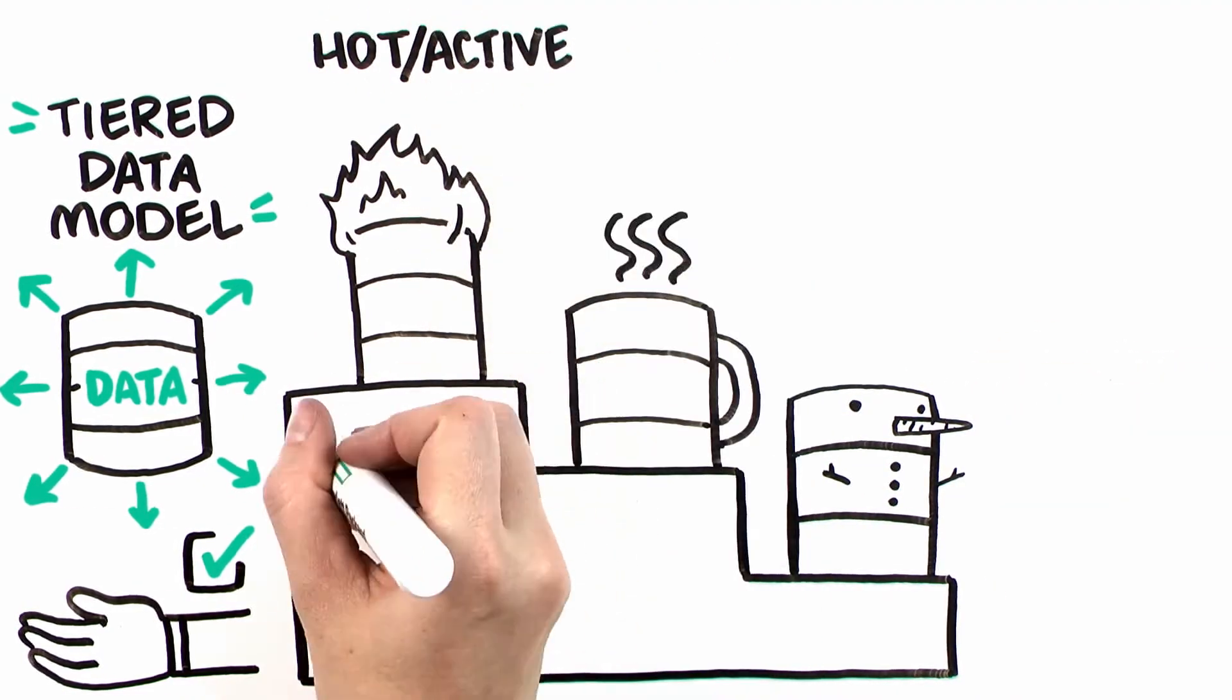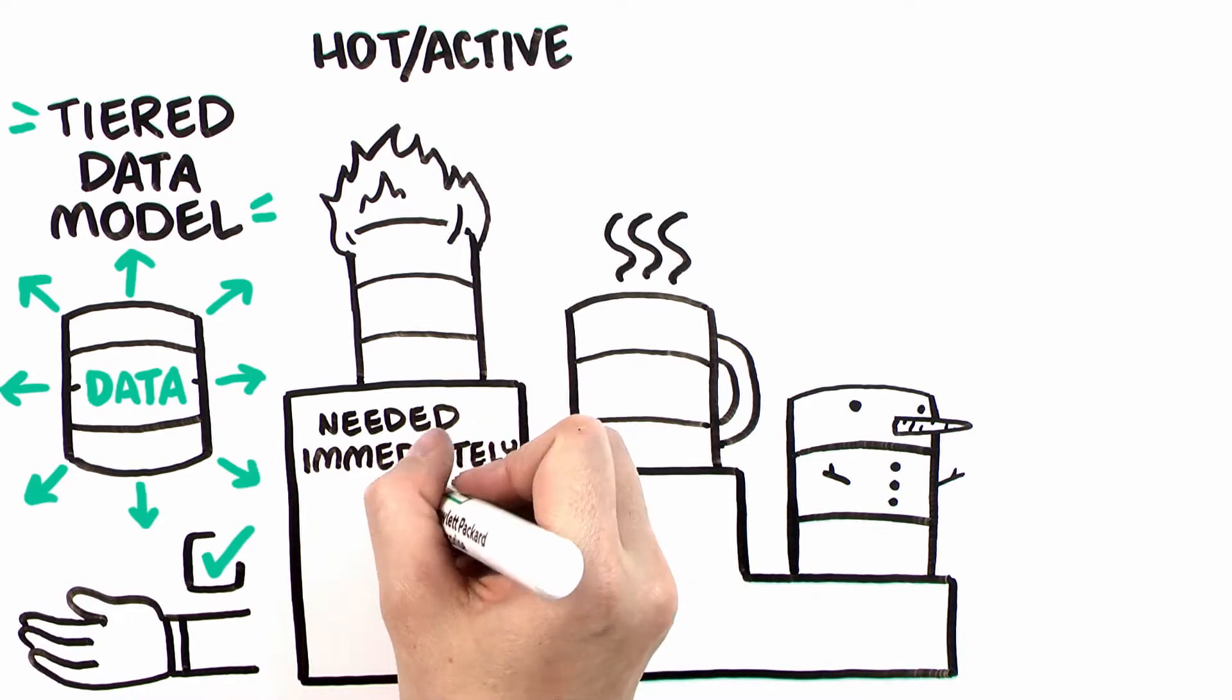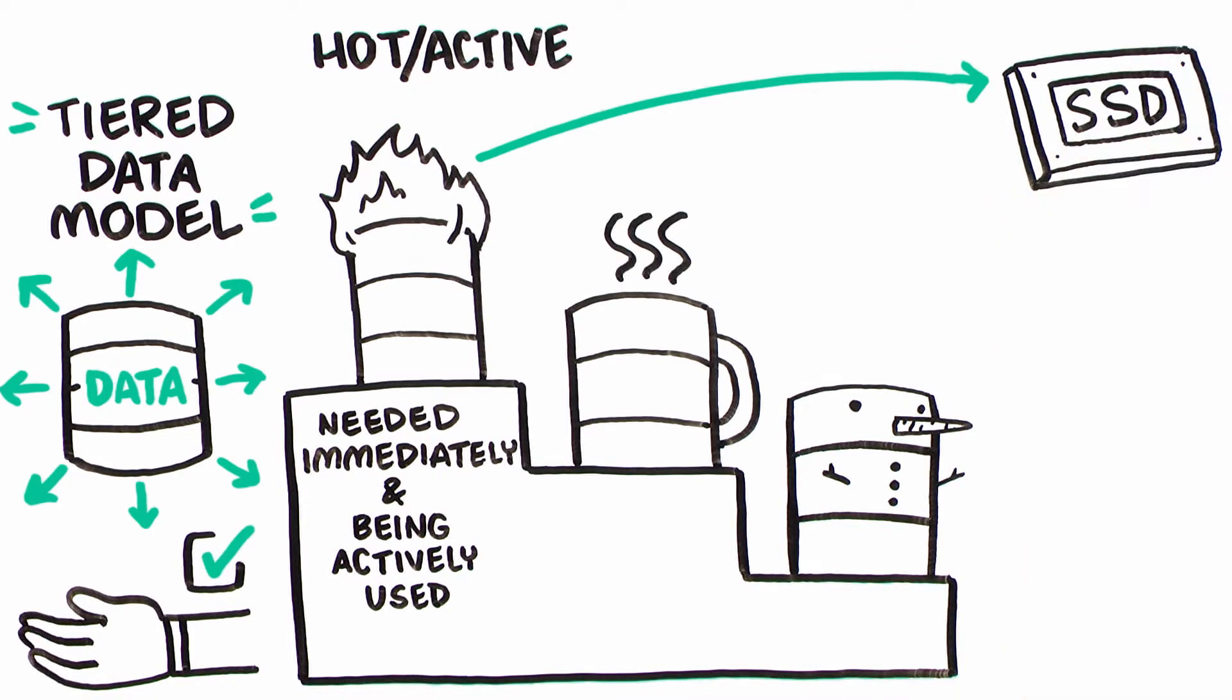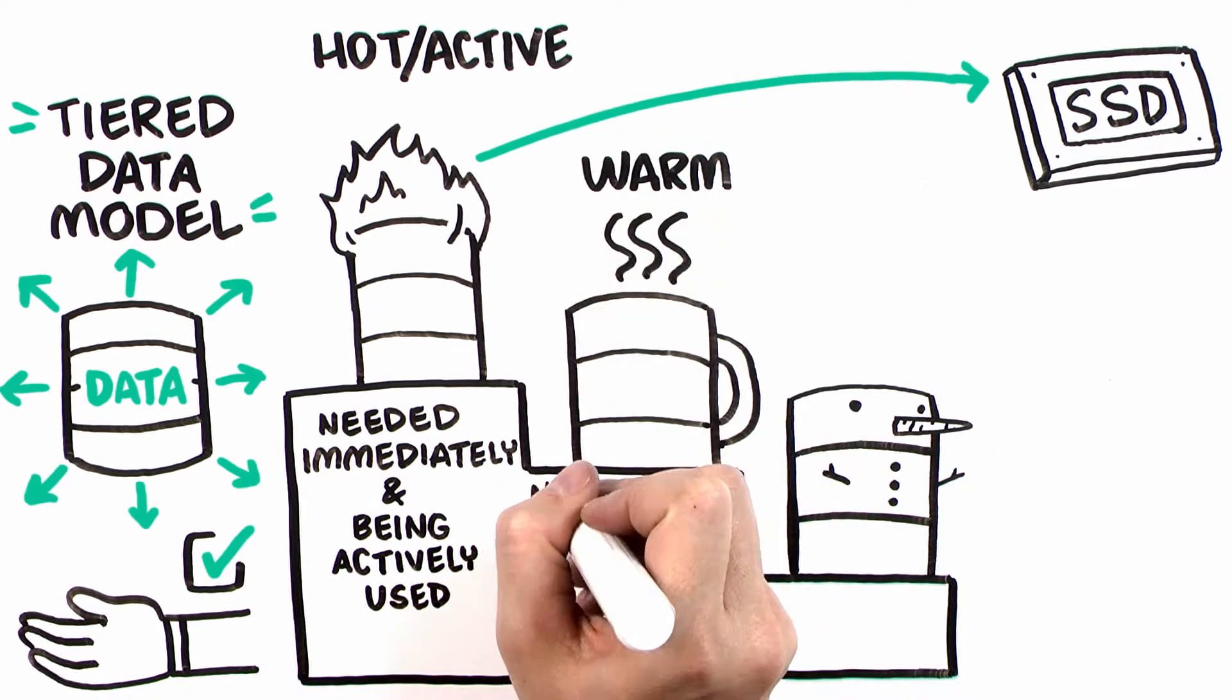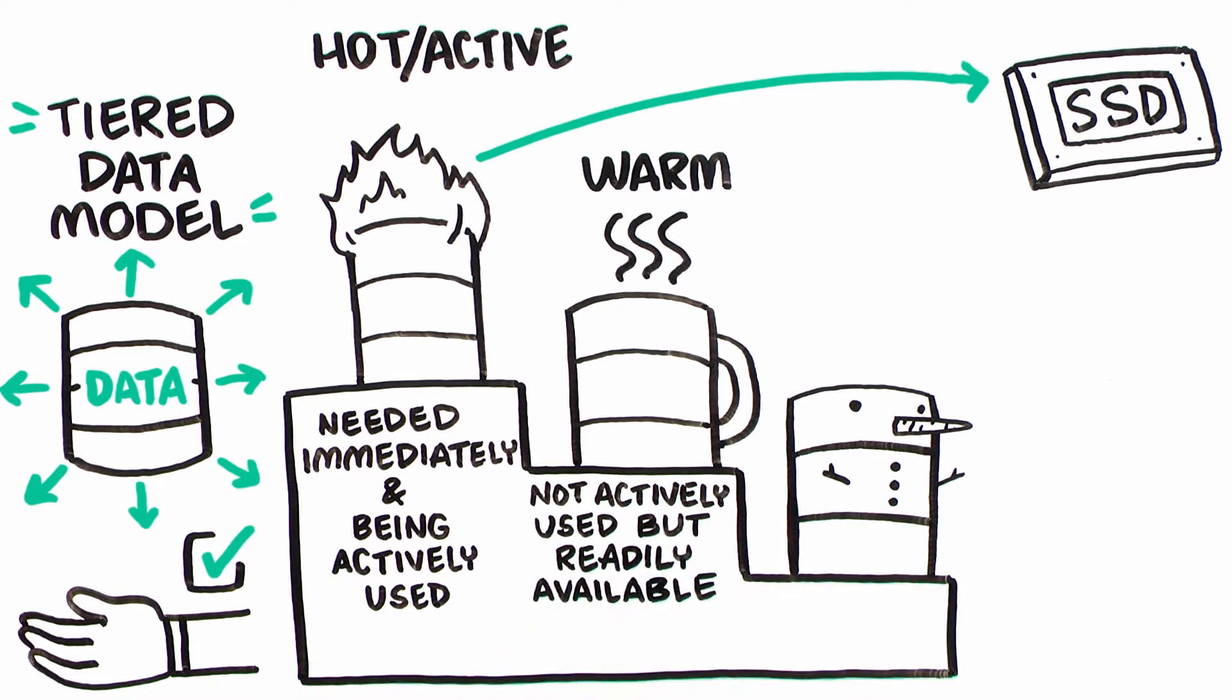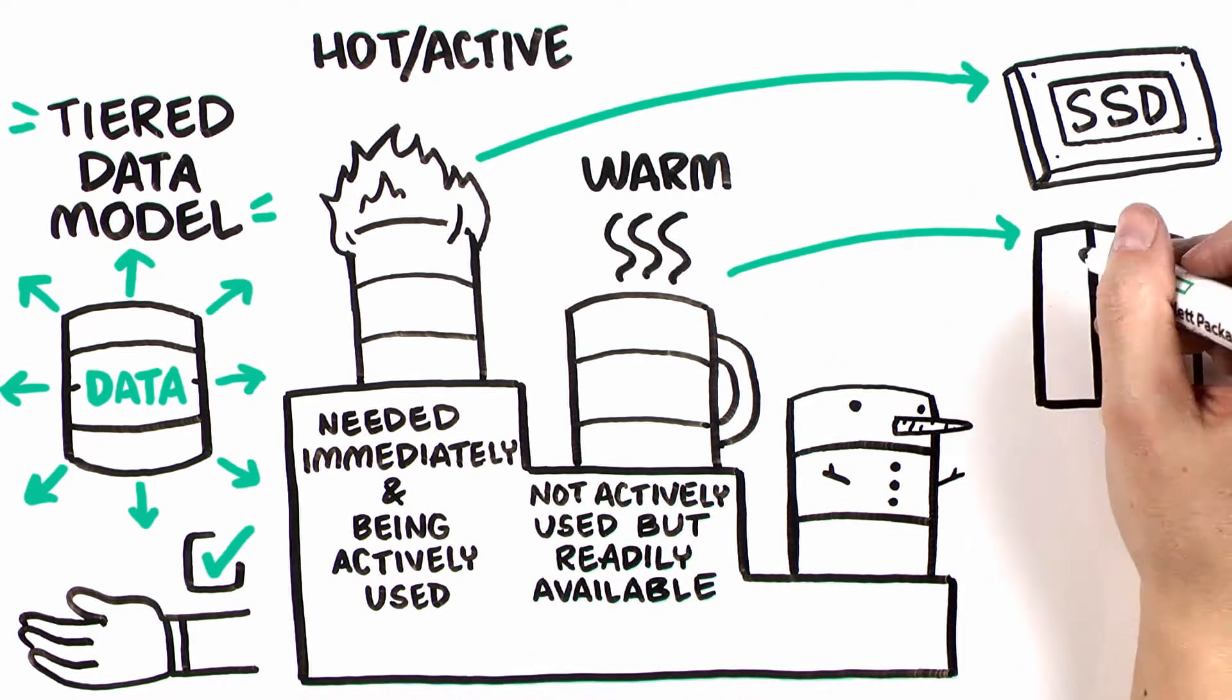The hot tier is for active data which is needed immediately and is being actively used. Typically SSD or flash memory is used. The warm tier is for data which isn't actively used, but does need to be readily available. This data is usually stored on hard drives or object storage systems.